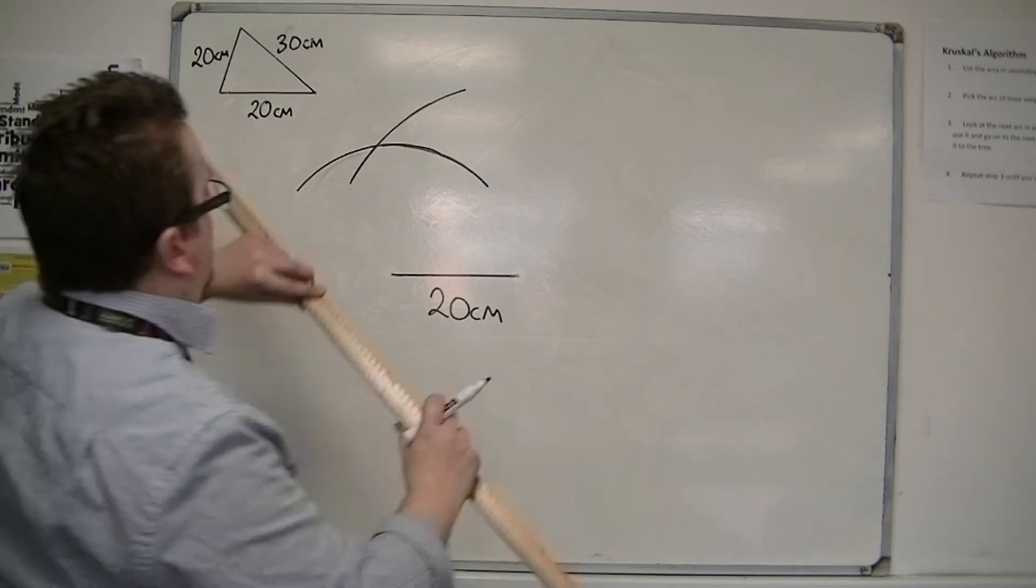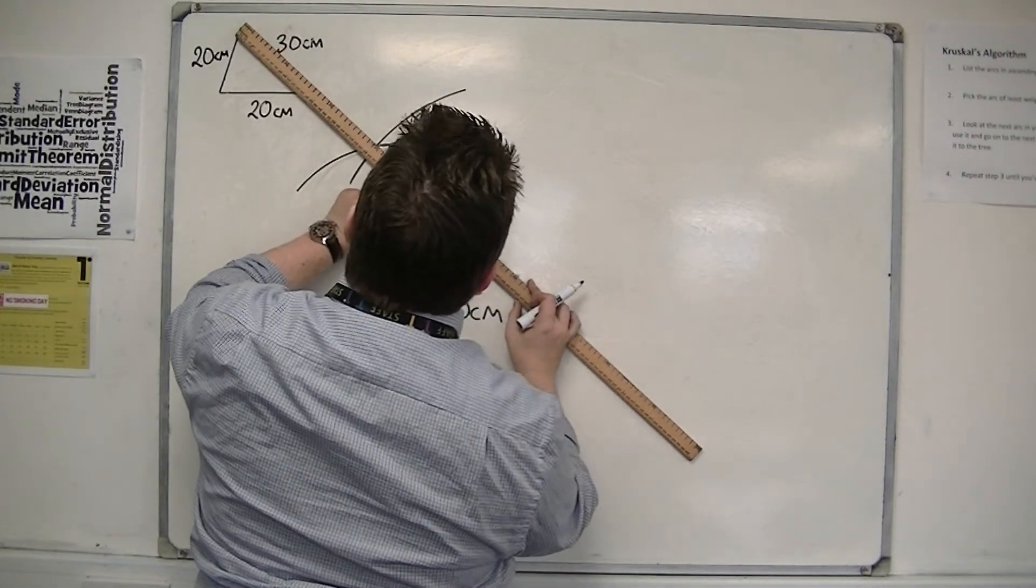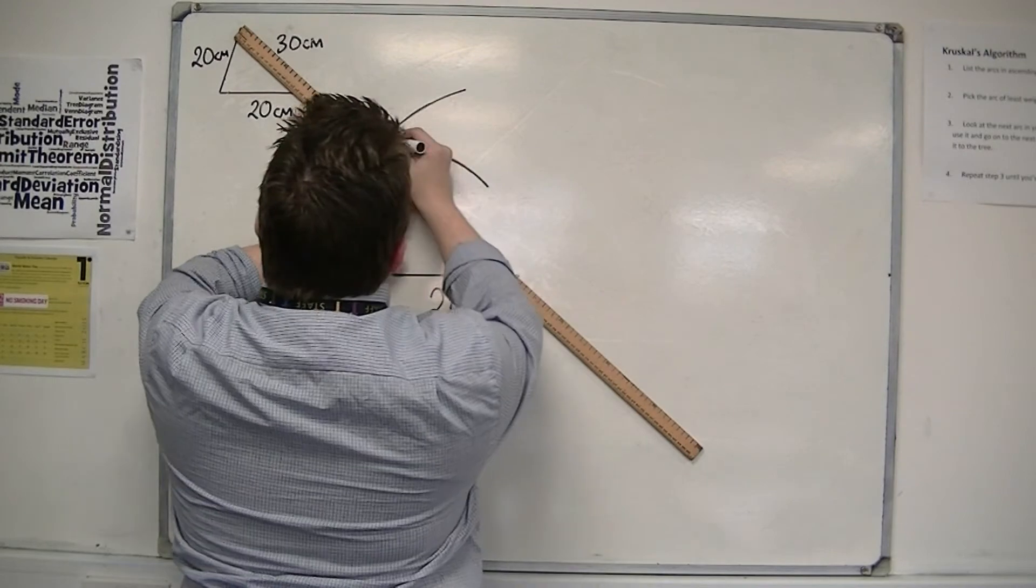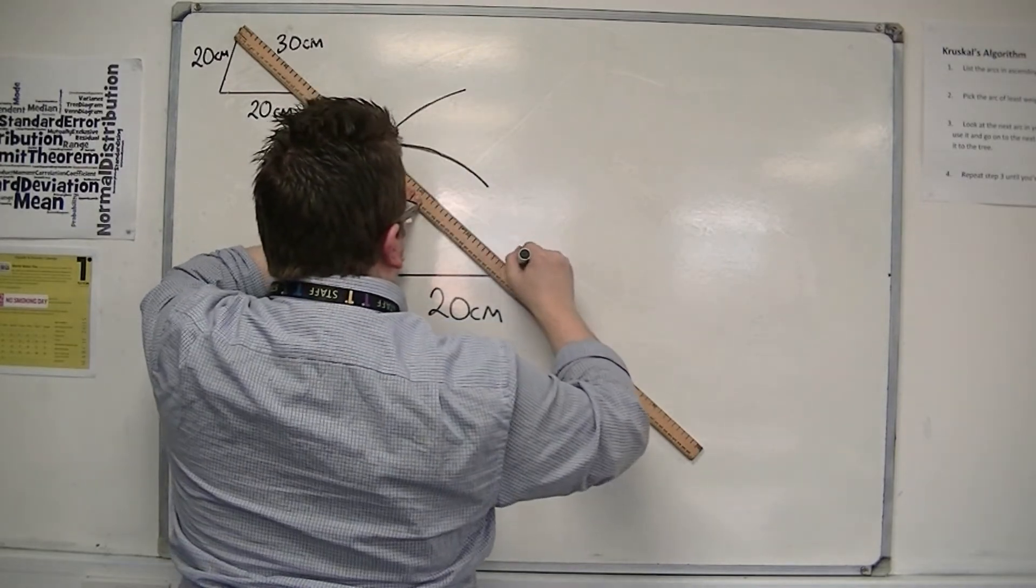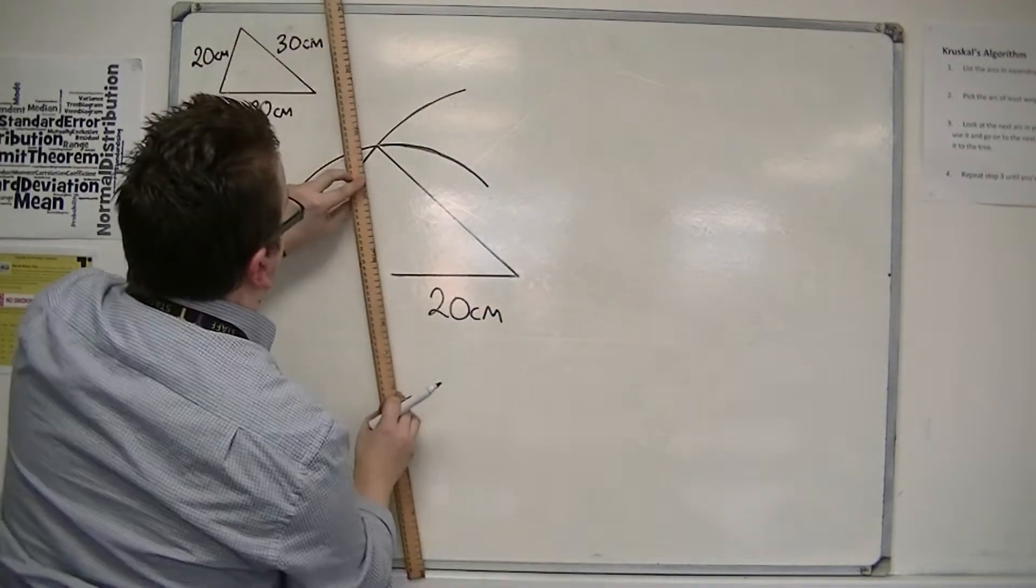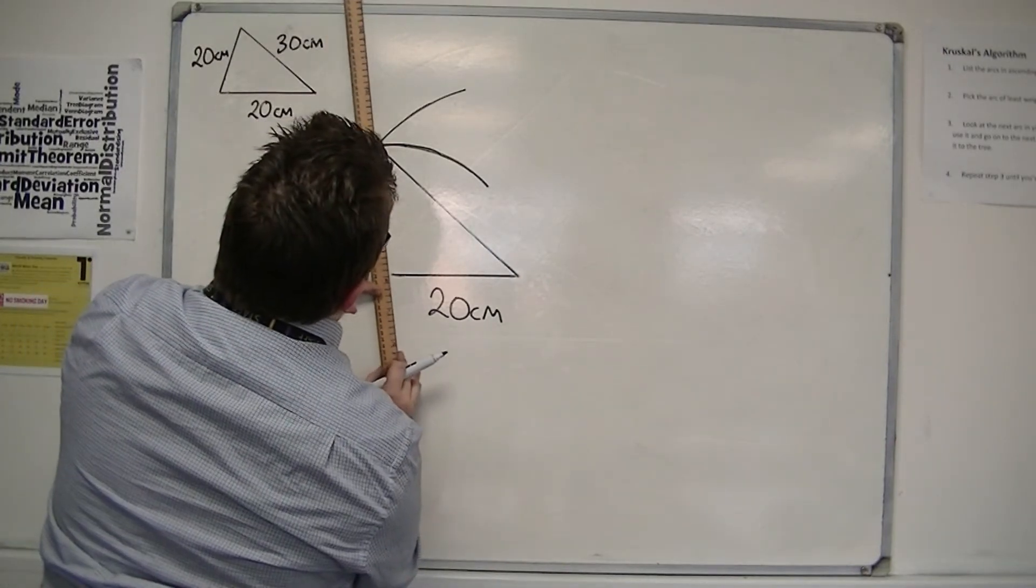So I then join up the corner with the cross, like so. And I do the same with the other corner.